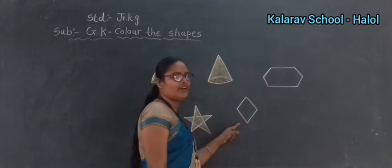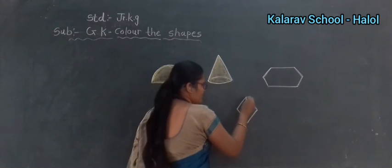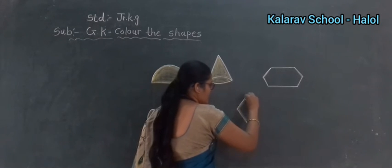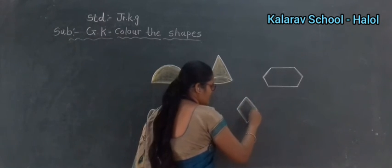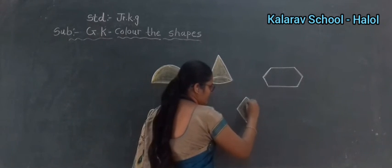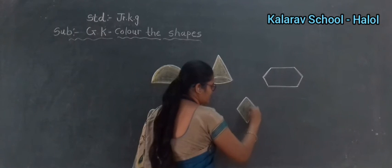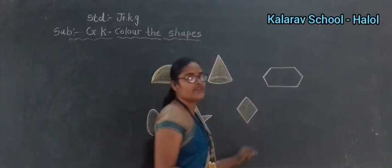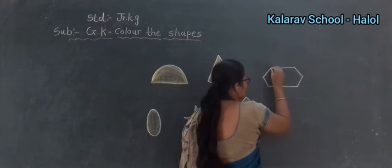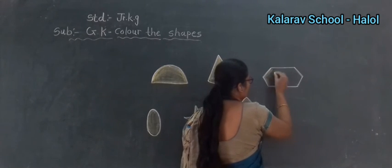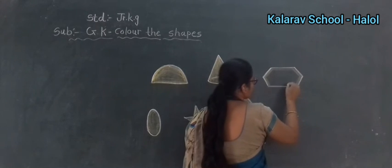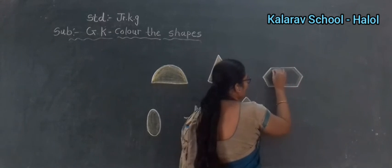Now, diamond. Color in the diamond — take whichever color you like and fill. We say this is a diamond. Complete, children. Now this one is hexagon. We say hexagon. You also color here. First we cover the border, and then fill.